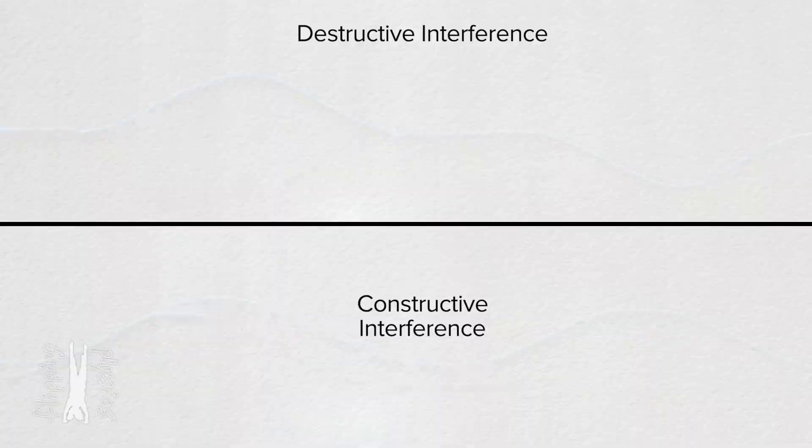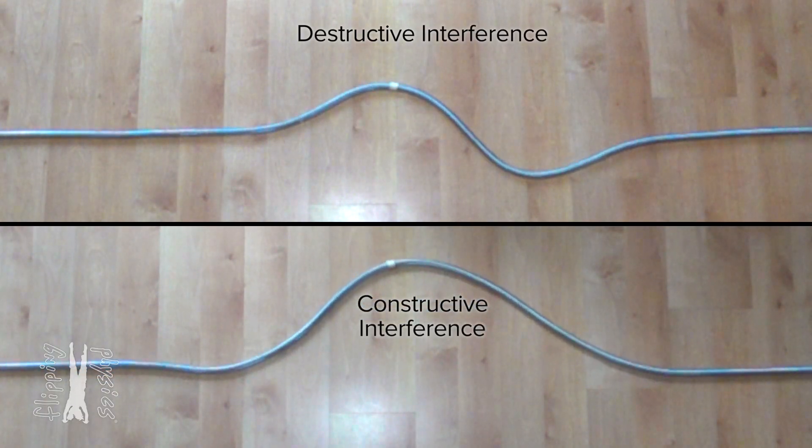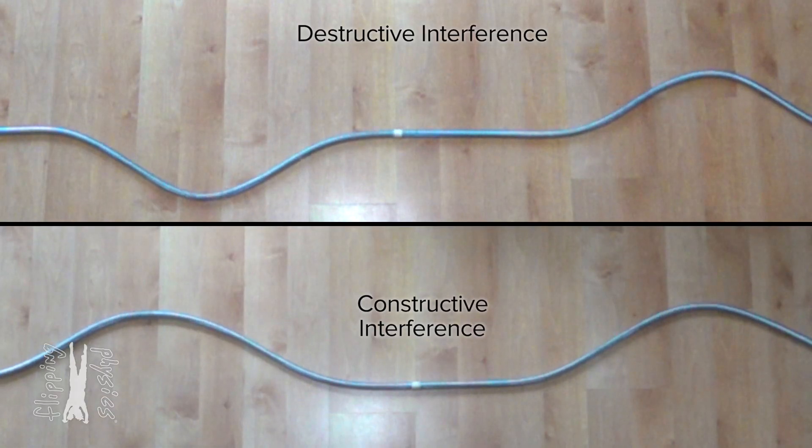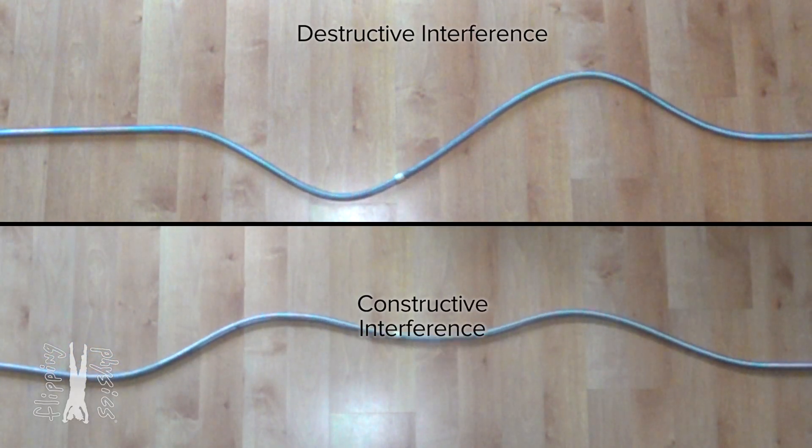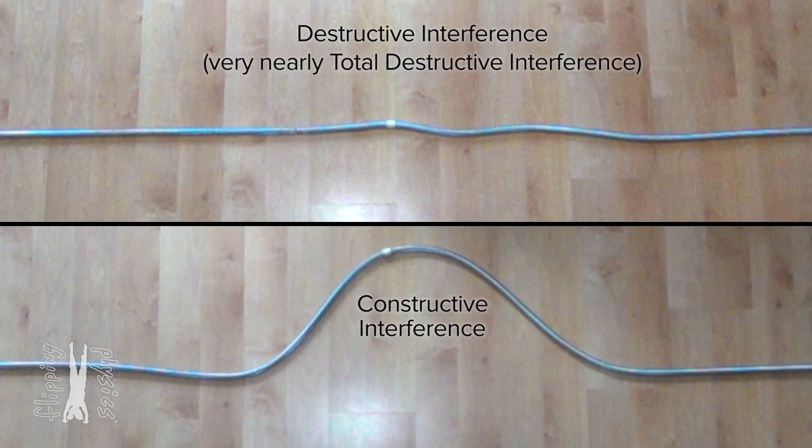The two waves interfere via superposition and actually, while they occupy the same space, do cancel one another out almost completely. And you can see that they do almost completely cancel one another out when we pause the demonstration at the moment when the two waves occupy the same space. You can see we very nearly have what is called total destructive interference.